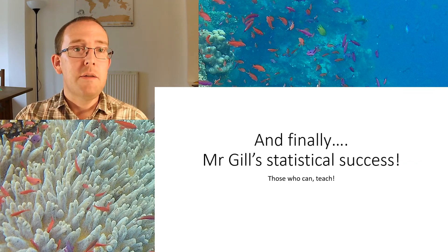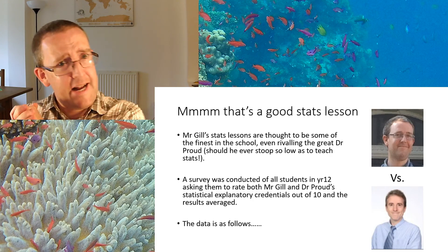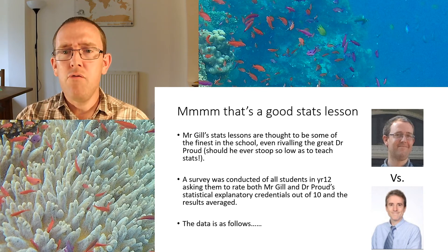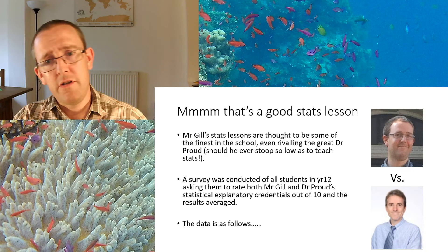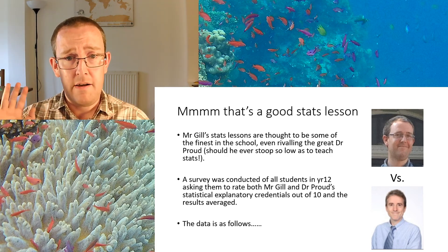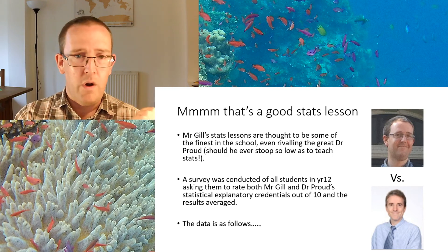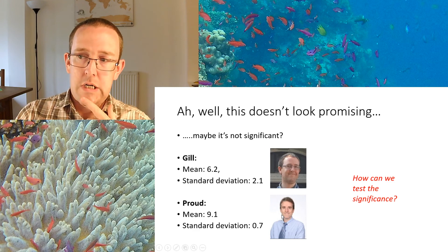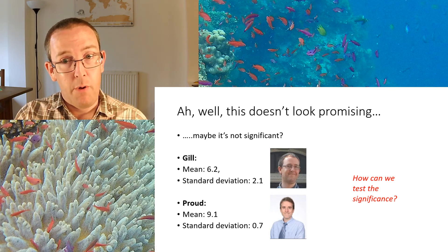Last example: Mr Gill's statistical success. It has been said that my stats lessons are thought to be the finest in the school, even rivalling the great Dr Proud. A survey was conducted of all students who studied both in year 12, asking them to rate both Mr Gill and Dr Proud's statistical teaching on a simple 1 to 10 scale — 10 being fantastic, 1 being terrible — with data averaged over 50 students each. What's the test? What's the null hypothesis? Work that out now.